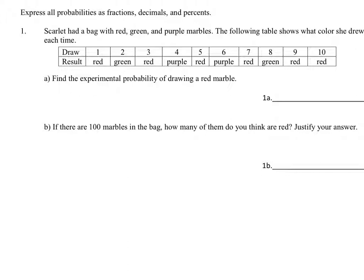Find the experimental probability of drawing a red marble. As it turns out, she starts with a red marble and then green, all the way up to ten draws, which means it's going to be out of ten.